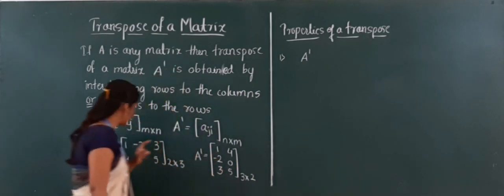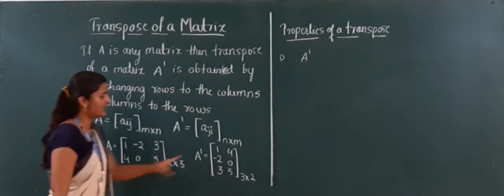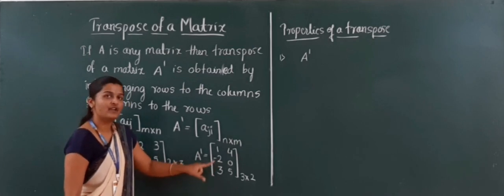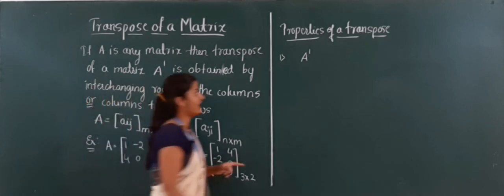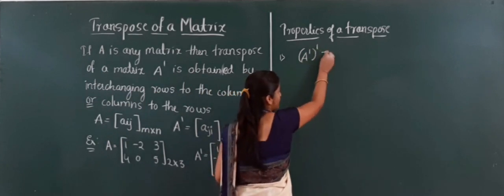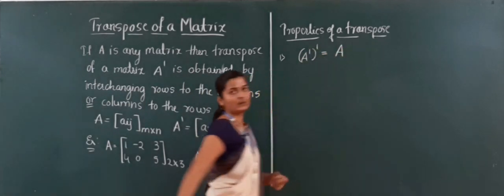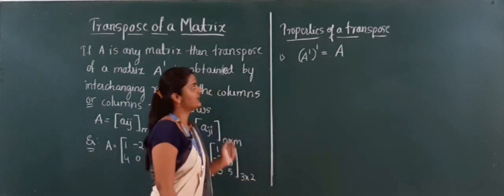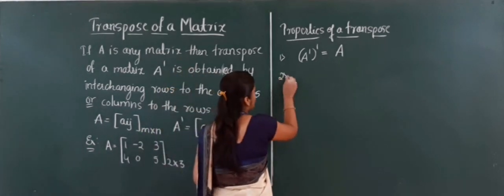After applying transpose to A you get A dash. If we apply the transpose again to A dash — that is, A dash, dash — then you will get the original matrix A only. This is the first property: (A')' = A.